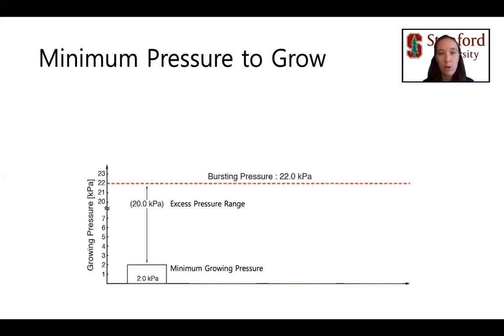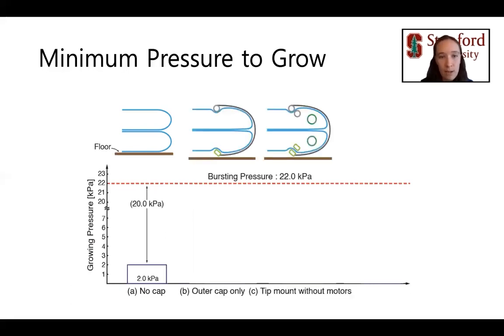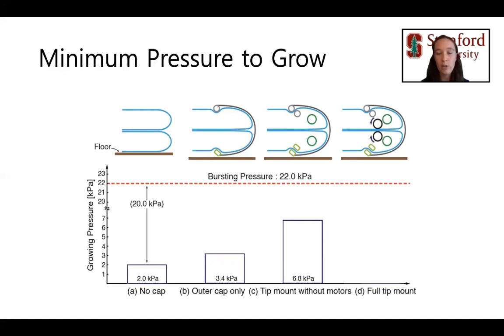We measured the minimum pressure to grow in four scenarios: without the tip mount, with the outer cap only, with the tip mount without the motorized rollers, and with the full tip mount. Compared to the robot without any tip mount, the outer cap increased the growth pressure by 1.4 kPa due to the friction between the outer cap and the floor, as well as between the outer cap and the robot body. The inner part increased it by another 3.4 kPa, indicating that decreasing the friction in the rolling interlock could have a big effect on lowering the growth pressure. The rollers did not change the minimum growth pressure because they rolled without frictional losses. Overall, with the full tip mount, the amount of pressure available between the growth pressure and the burst pressure only decreased by 24%, indicating that the tip mount was not very encumbering.